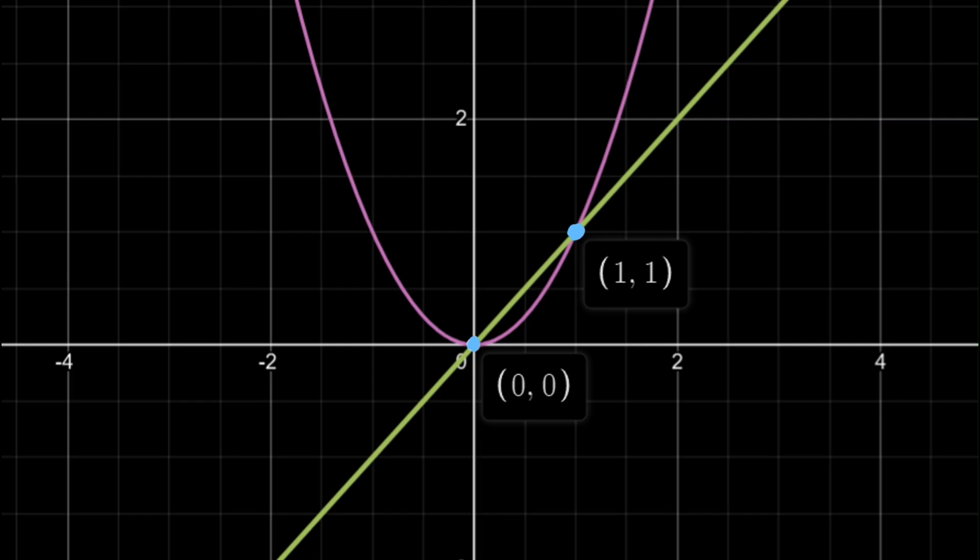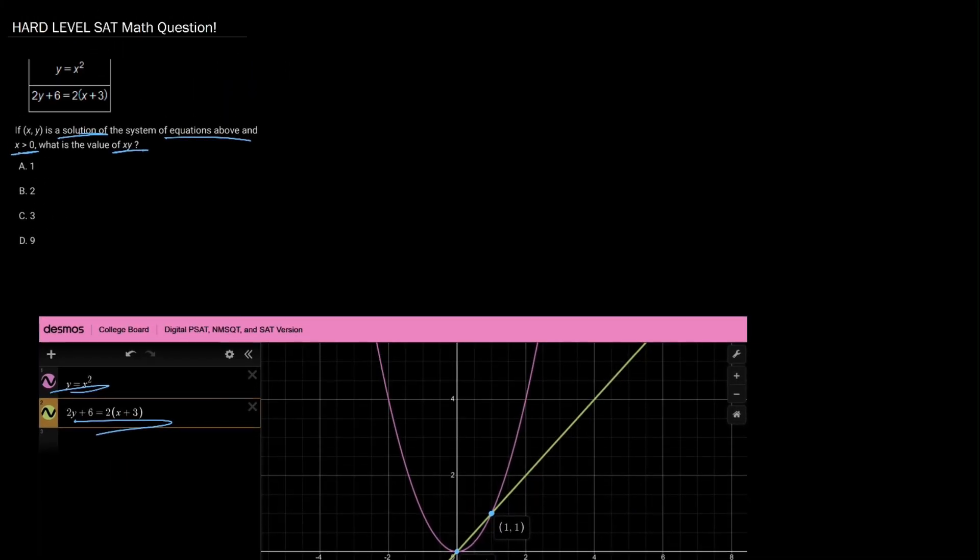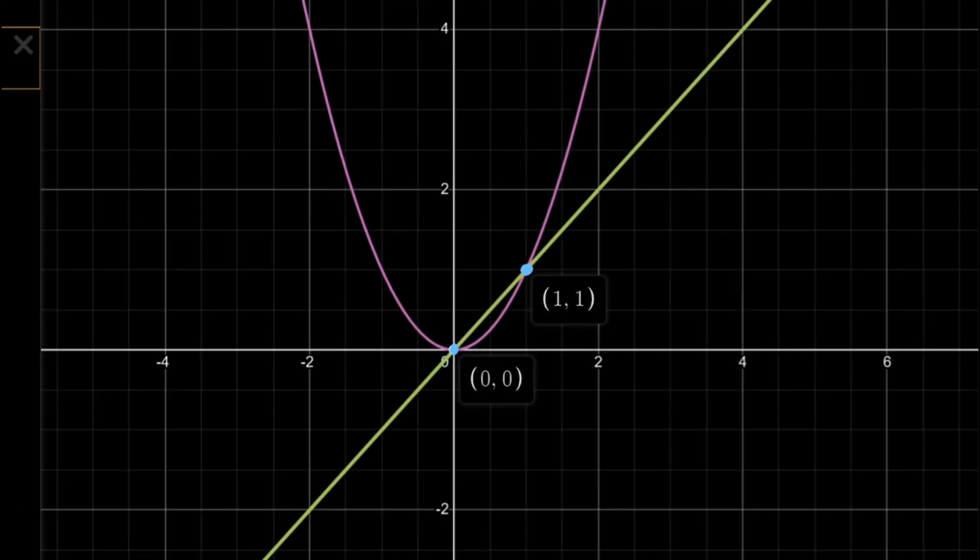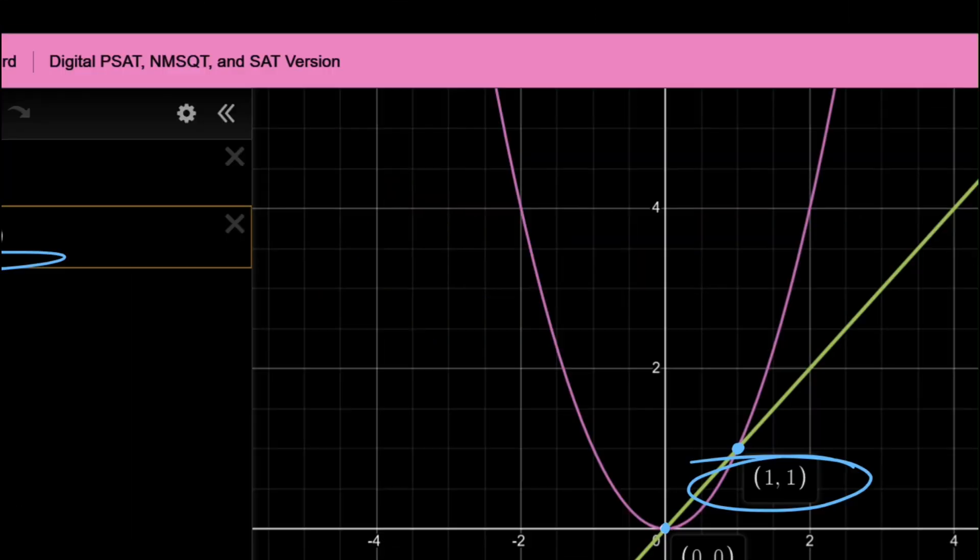So this system actually has two solutions, but we have to remember that in the equation we have x is greater than zero, so that means that the solution we want is (1, 1).